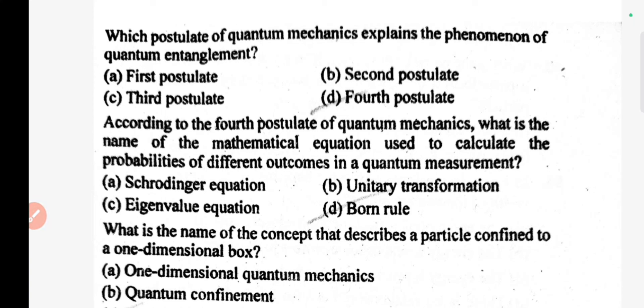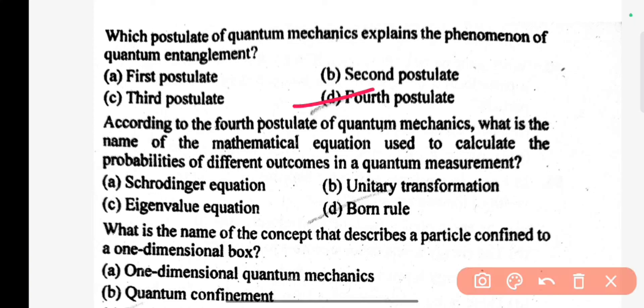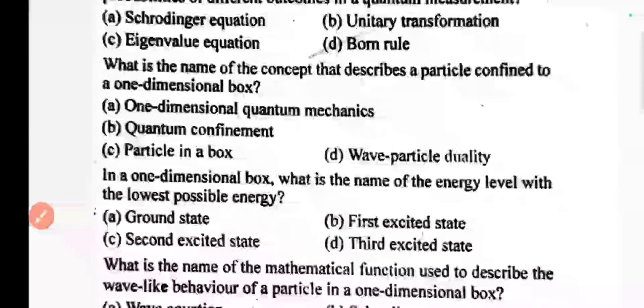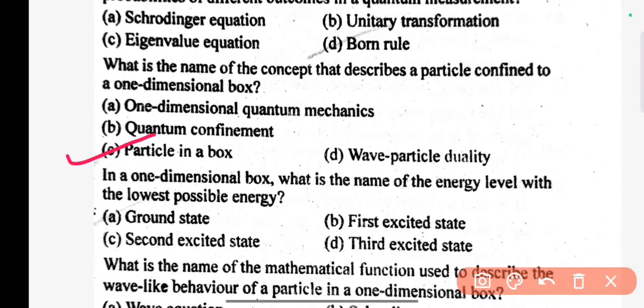Which branch of quantum mechanics explains the phenomenon of quantum entanglement? D is the correct answer. According to the fourth postulate of quantum mechanics, what is the name of the mathematical equation used to calculate the probabilities of different outcomes in a quantum measurement? The correct answer is C.